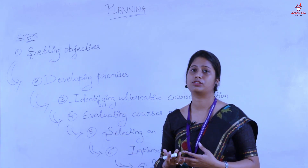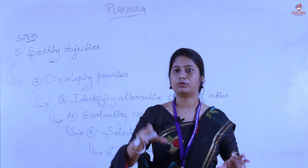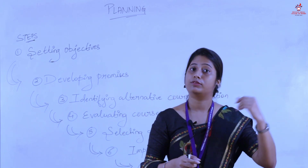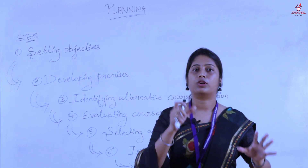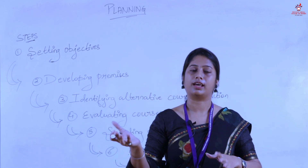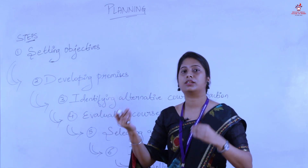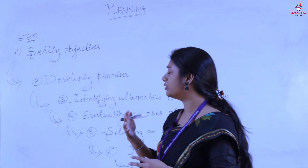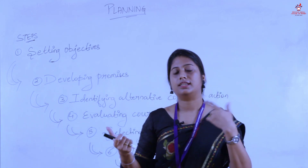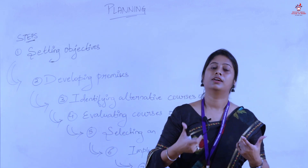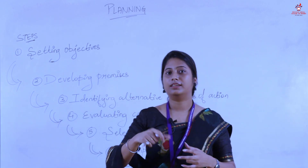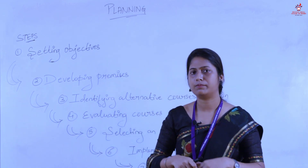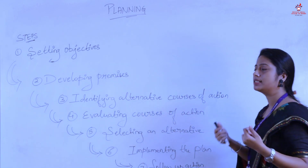The fourth step is evaluating courses of action. After identifying multiple options, we evaluate each one by listing out its merits and demerits — the advantages and disadvantages. For example, if Ria wants to choose KFC, she lists the pros and cons of that choice. Similarly, organizations list all the advantages and disadvantages of each alternative to find out which one is most beneficial.